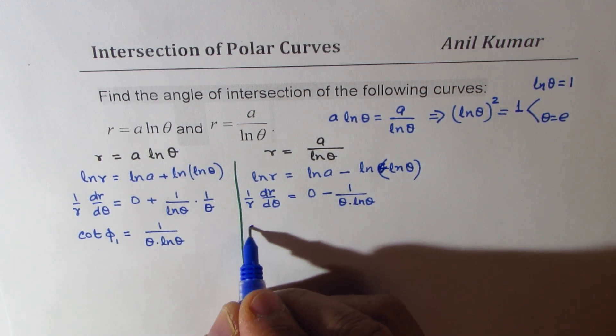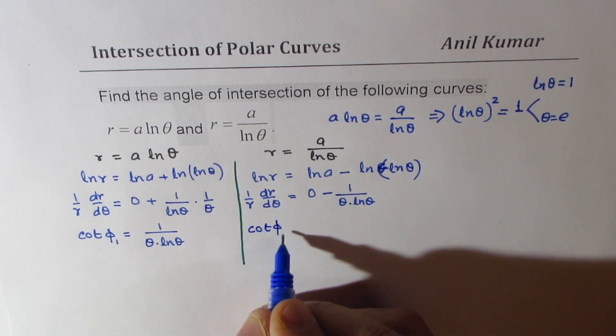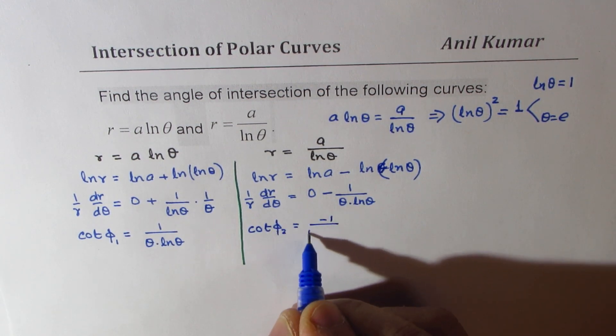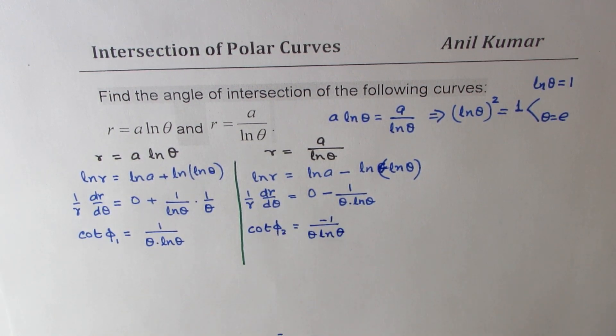So from here, we get cot phi 2 as equal to minus 1 over theta over ln theta. You see that part?